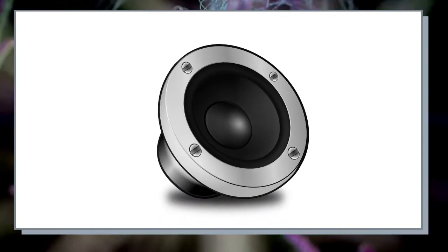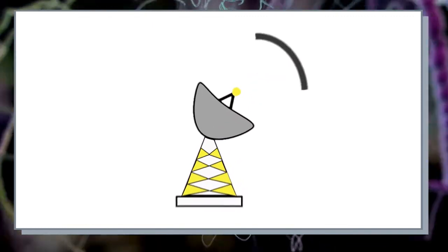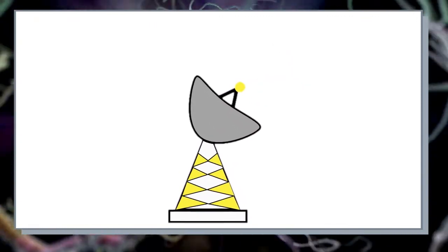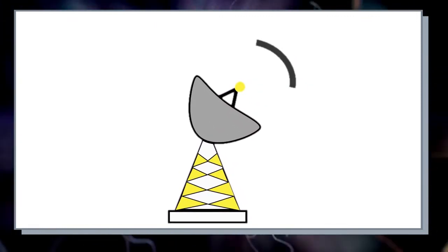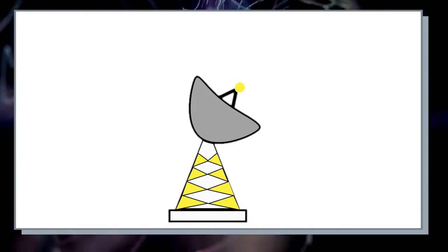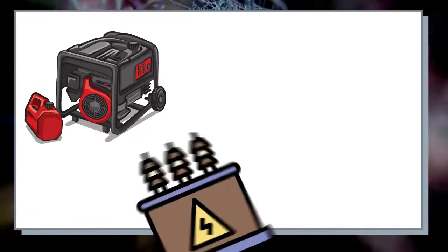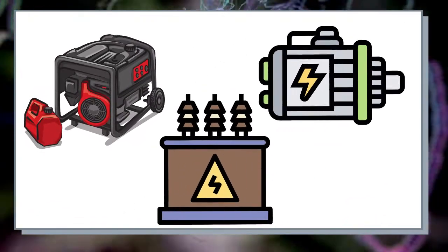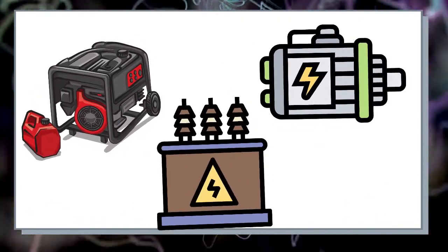Electromagnets are also used to a great extent in communication or in sending signals. Generators, transformers, and electric motors are also made of electromagnets.